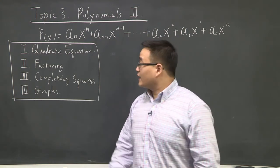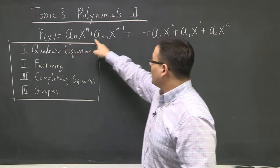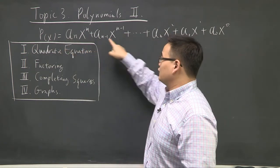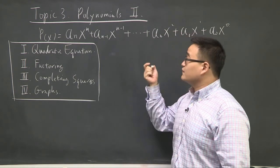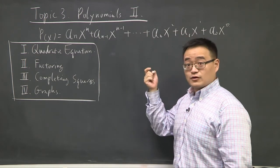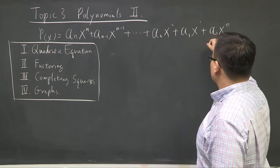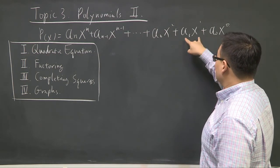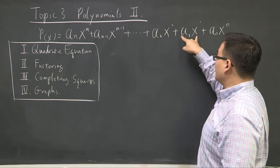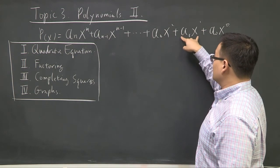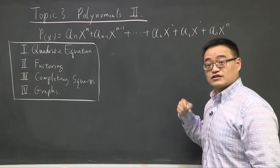If you take a look at this, this is P(x). What does a general polynomial look like? Very ugly, many terms. In topic 2, the first section on polynomials, we discussed two of the simplest — a monomial, which is a single term, and then we talked about what happens when we move one degree higher to the first degree polynomial, which is the linear equation.